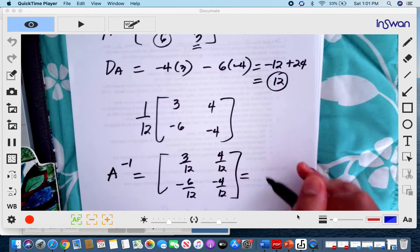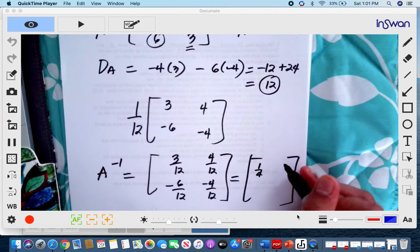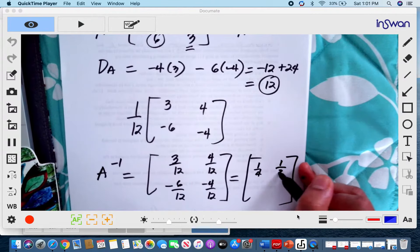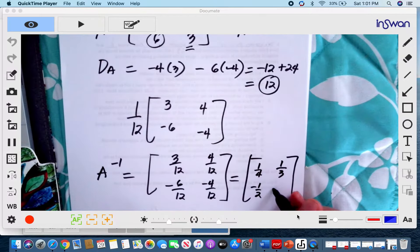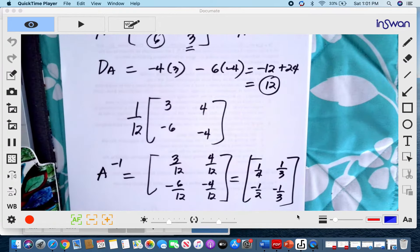And to simplify the matrix, we will now have 1/4 and 1/3, -1/2, and -1/3. So this is now the inverse of the given matrix A.